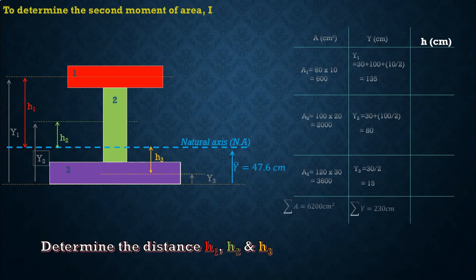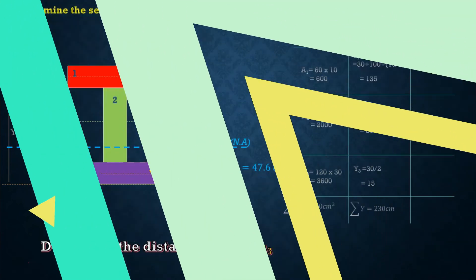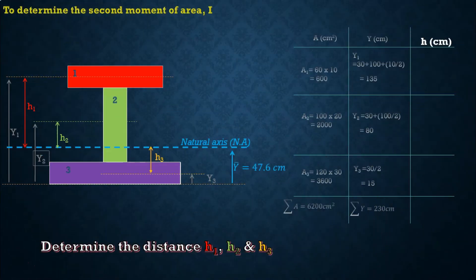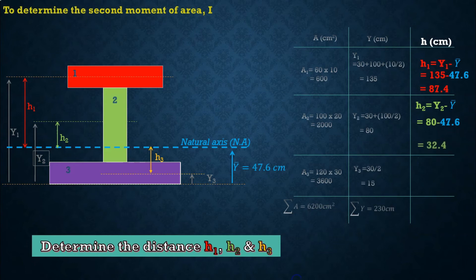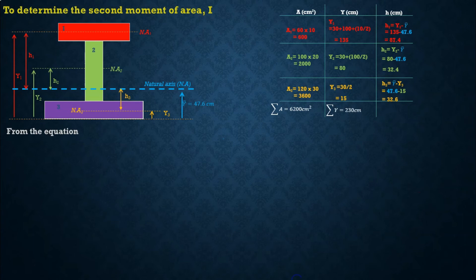Now we calculate the second moment of area I. Firstly, determine the distances H1, H2, and H3 for each of the three parts.